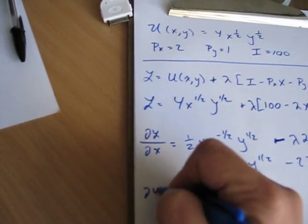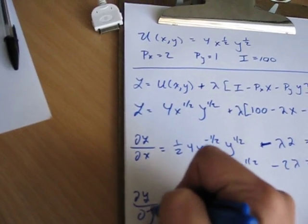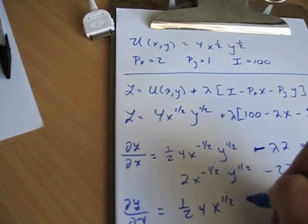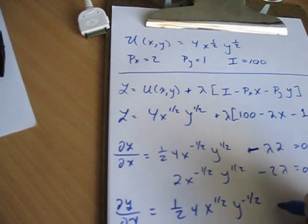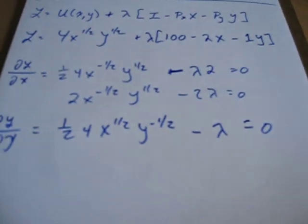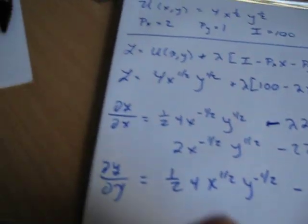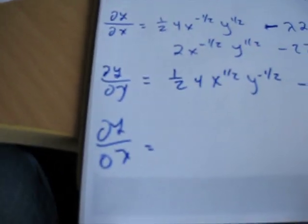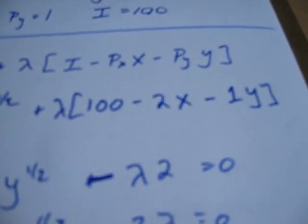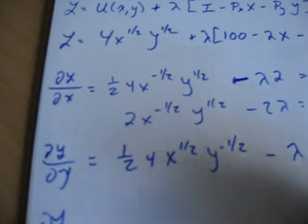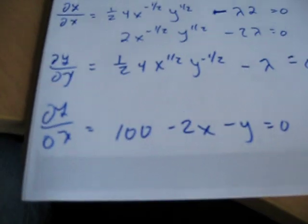With respect to y, partial Lagrangian partial y, this is equal to 1 half, 4, x to the 1 half, y to the minus 1 half, minus lambda. Because the price of y is equal to 1, that's our second first order condition. And then with respect to the Lagrangian multiplier, it's just the budget constraint once again: 100 minus 2x minus y is equal to 0.